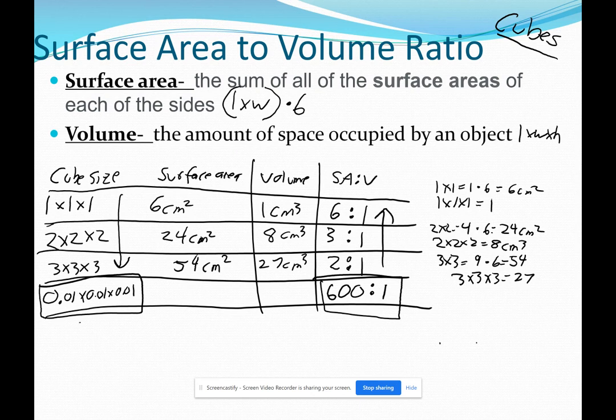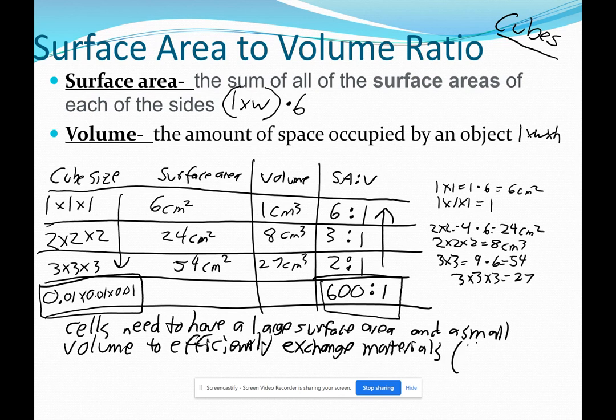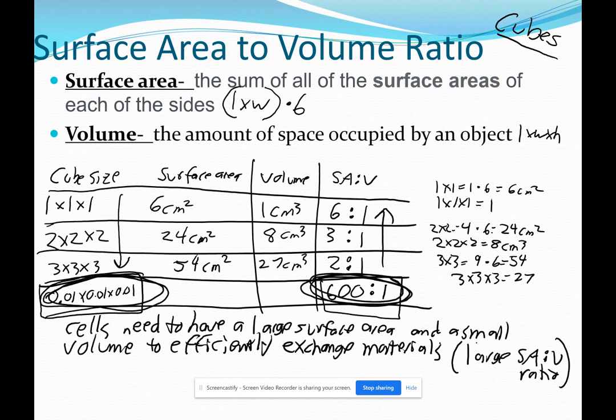So let's just write one conclusion statement here. Cells need to have a large surface area and a small volume to efficiently exchange materials with the environment. And we call that a large surface area to volume ratio. That's what all this math is proving to you. Cells need to stay way down here on the small end of things so that this surface area to volume ratio stays big.